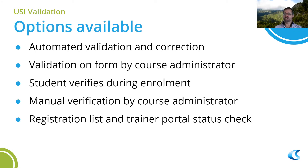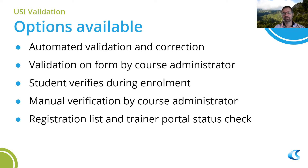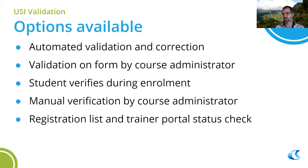Here are the options available in the system. You can have automated validation and correction — that's what most of you have set up — so that when someone submits their enrolment data including the USI, the USI is verified. If it doesn't match verification, a USI reminder step is applied. If it does match, it's marked as USI verified.